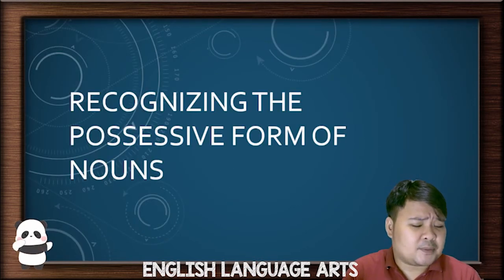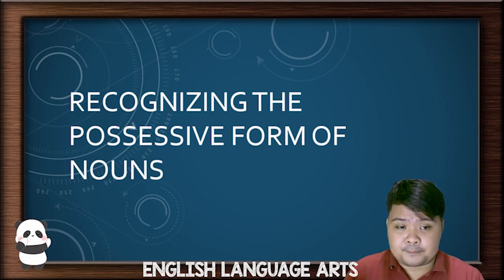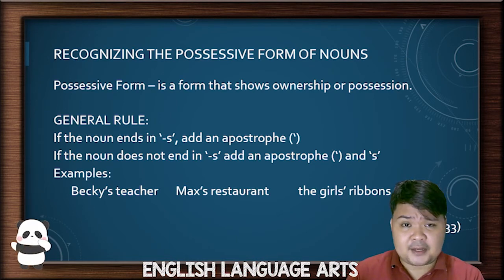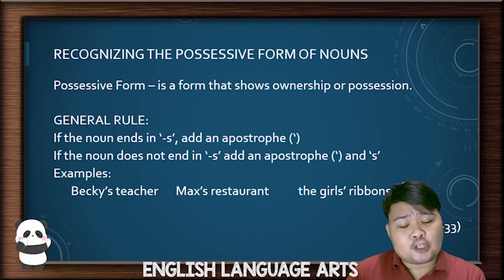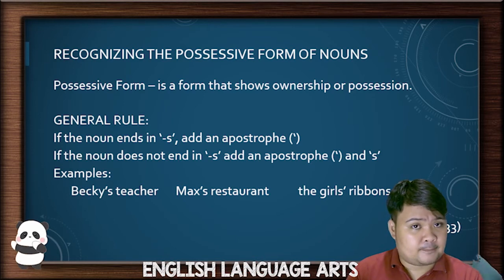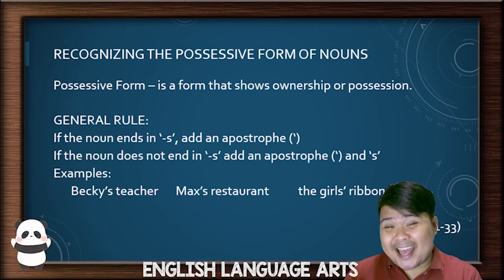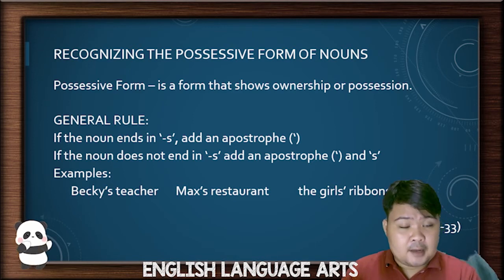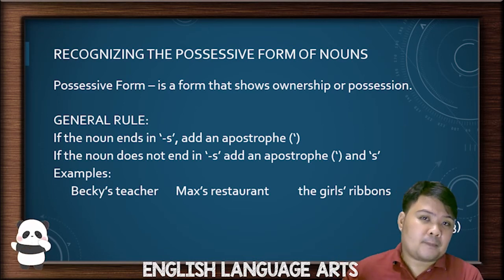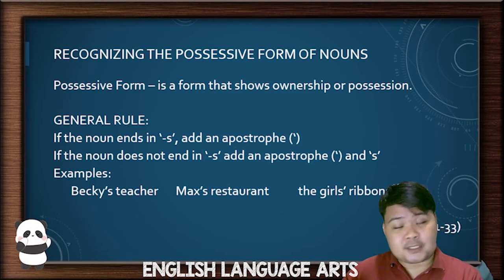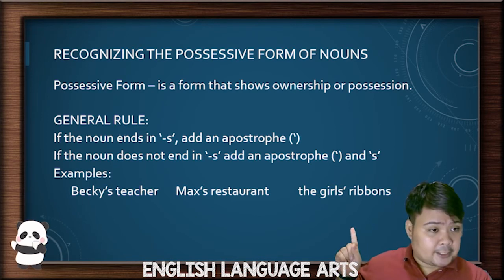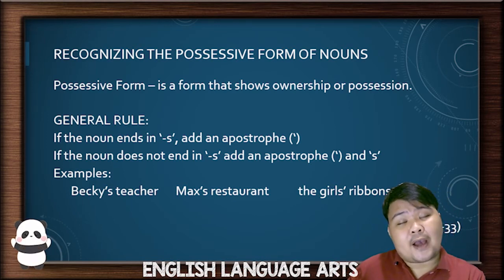Next, we move to the possessive form of nouns — the other form. The possessive form is the form you use to make a noun show ownership — it owns something. The general rule is: if the noun ends in S, add only an apostrophe. If it does not end in S, give it an apostrophe and then S. For example, Becky ends in Y — not S — so it becomes Becky's teacher. Max's restaurant works the same way. But girls already ends in S, so you just add an apostrophe: girls' ribbons.